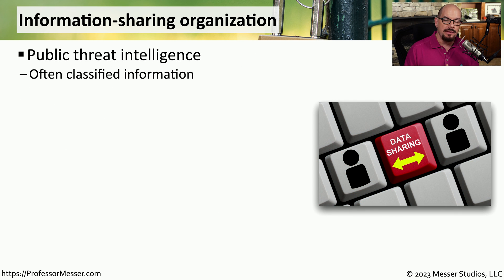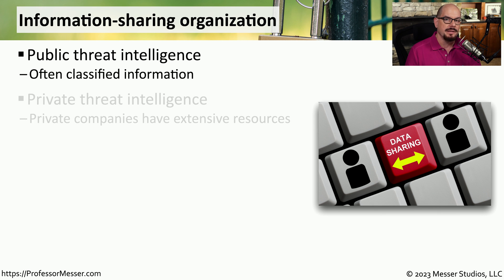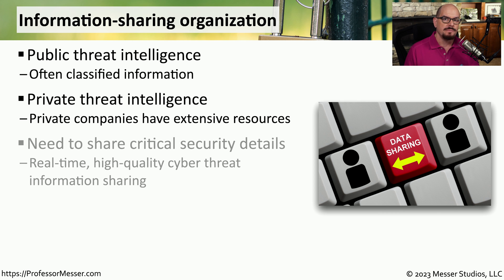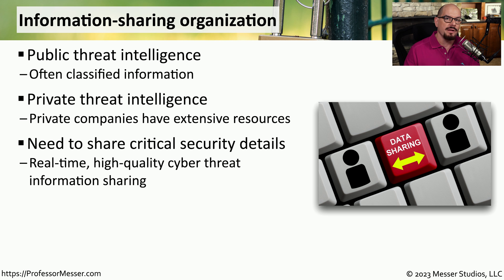Some organizations compile this threat intelligence to make the data available to their customers. Sometimes this threat data is compiled from public sources; other times it's from classified information that's been made public. Private companies tend to collect specific types of intelligence and often have additional resources to compile further details about these threats. This allows organizations to work together — looking for information about threats on their network and sharing it with everyone else who may be part of that group.